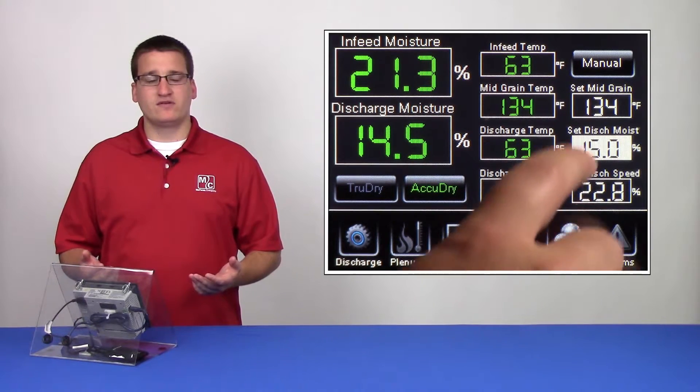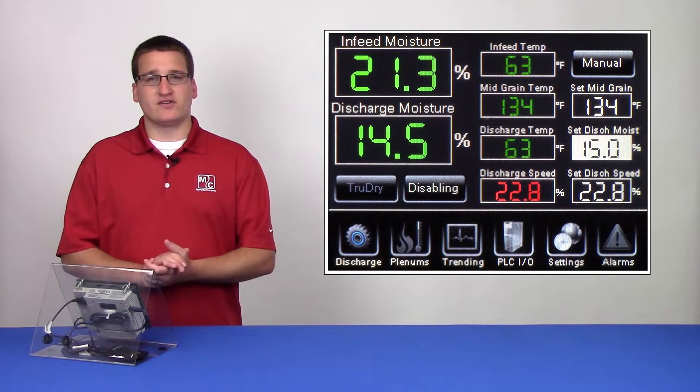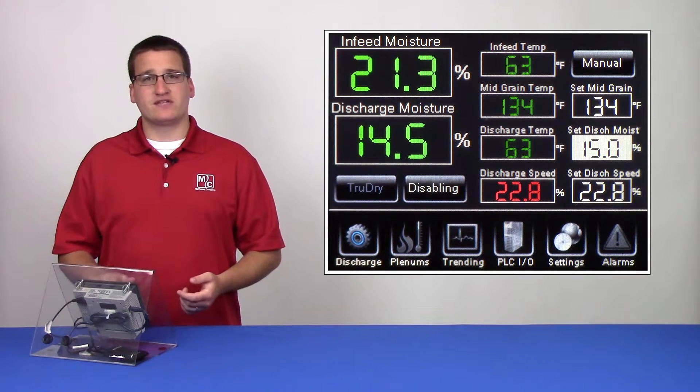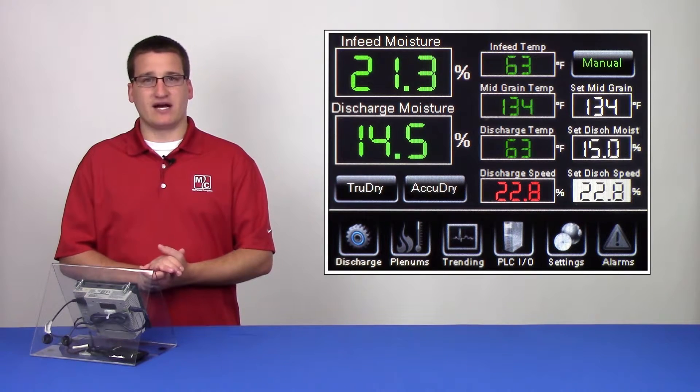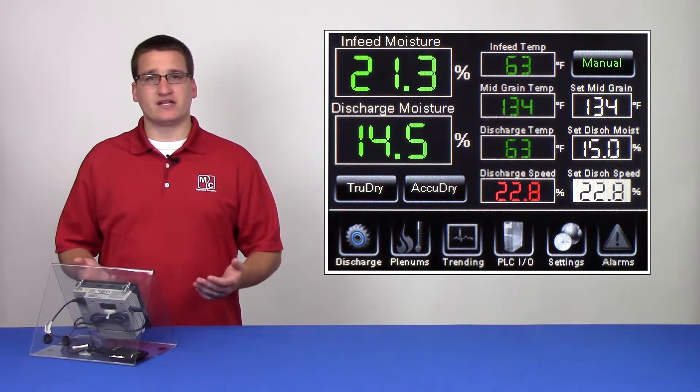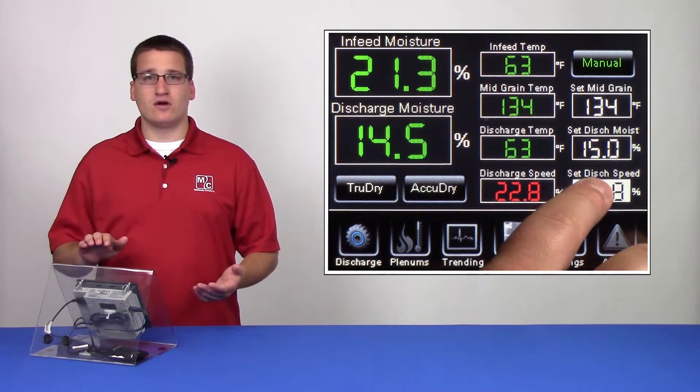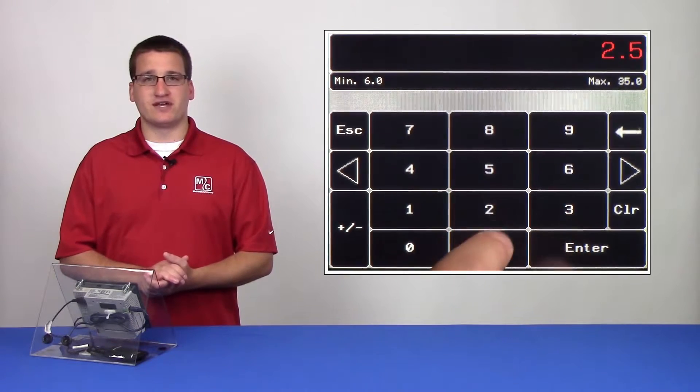If we switch to manual mode, we'll see that the manual button turns green, and notice that the set discharge speed box is now white. So now the user can control the discharge speed, and can no longer control the discharge moisture set point.